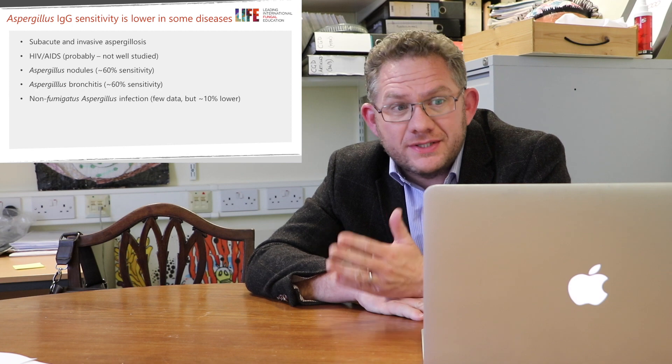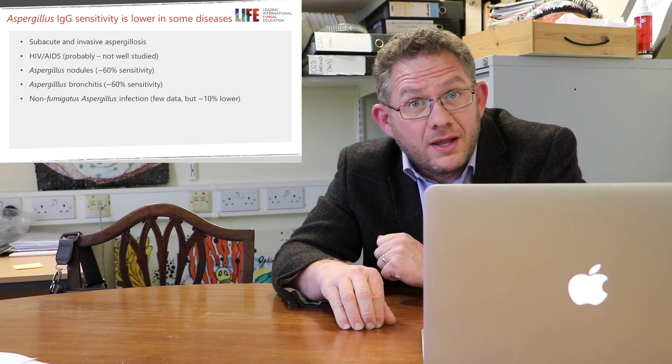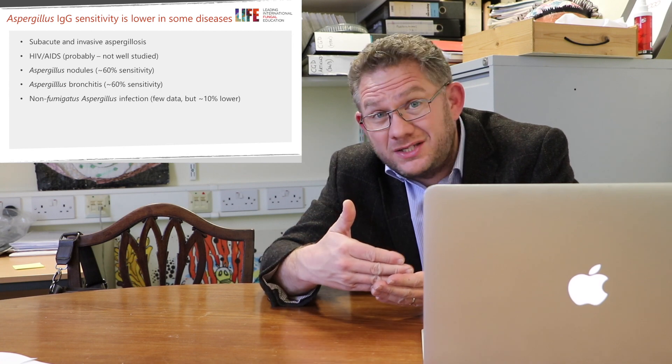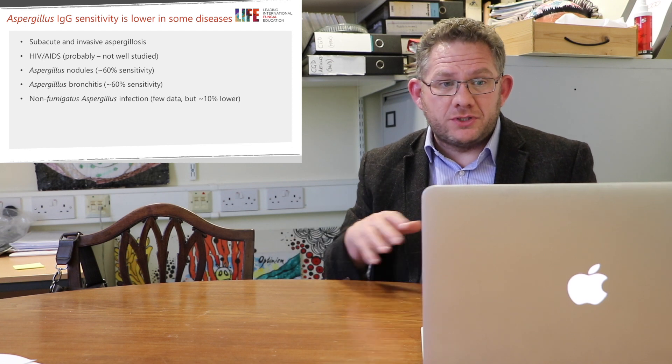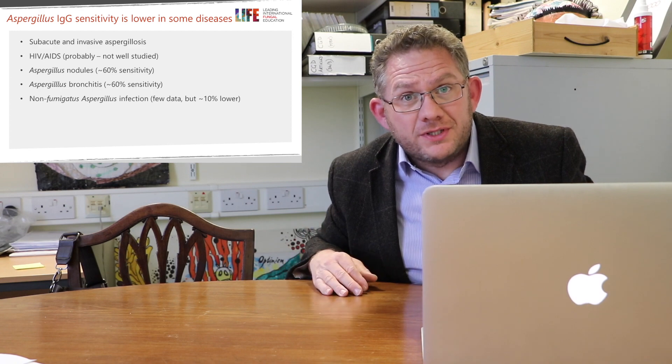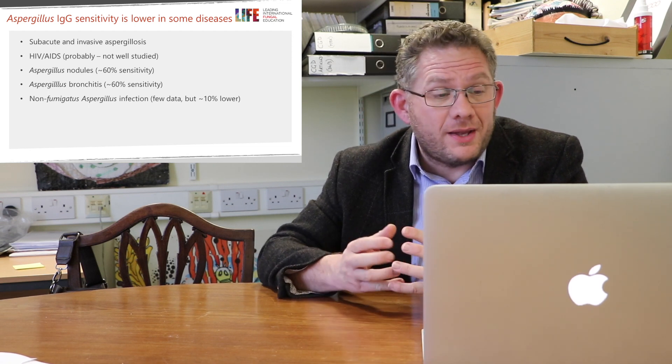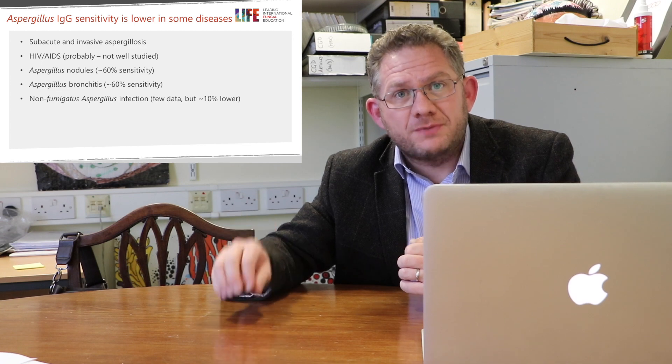Sensitivity also differs across disease types. Up to 99% of cases of chronic pulmonary aspergillosis are positive by one IgG test or another, but this is not the case in other conditions. In sub-acute and invasive aspergillosis, which occurs in immunosuppressed patients, many will not form an antibody response; in these cases, antigen testing such as galactomannan or beta-glucan may be more appropriate. In patients with HIV-AIDS, the rate of positivity of aspergillus IgG is not well described. Aspergillus nodules and aspergillus bronchitis have varying antibody positivity — just over half of these patients will have a positive IgG result. Patients with disease caused by non-fumigatus species may or may not have a positive aspergillus fumigatus-specific IgG.